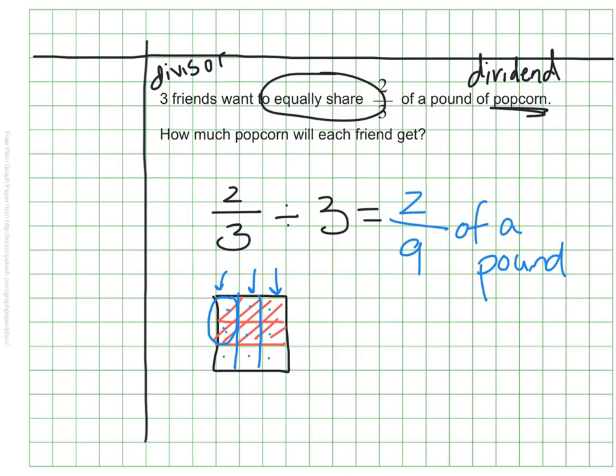So we could also think of this problem as each student getting one-third of two-thirds of the popcorn, two-thirds of a pound, which we know would be two-ninths. Keep that connection in mind as we continue working with dividing fractions.